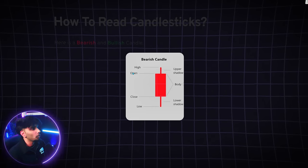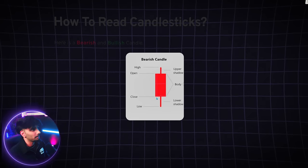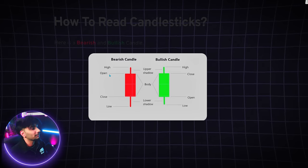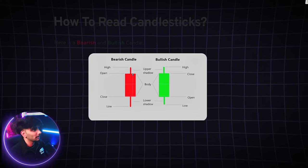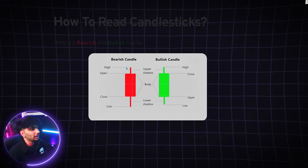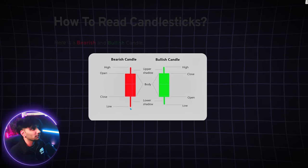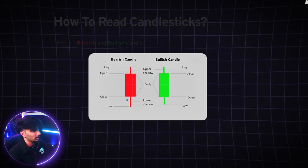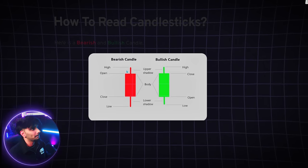For a bearish candlestick, the open is at the top and the close is at the bottom. Vice versa for a bullish candlestick — the open is at the bottom and the close is at the top. For the bearish candle, when it opened buyers tried to bring it to new highs, but sellers came in and brought it all the way down to the low. Then buyers came back at that low trying to bring the candle back up, but unfortunately couldn't, and we closed at the bottom. The high and low signify where buyers and sellers were fighting.